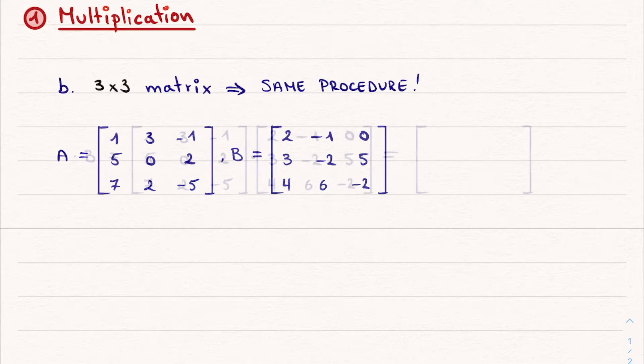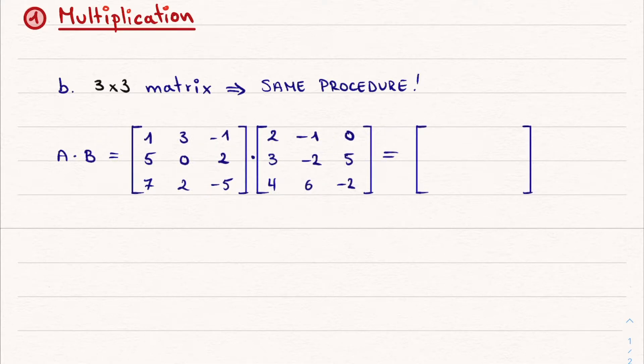Granted, this is a bit more work and thus more prone to errors, but the procedure remains exactly the same. The upper left element sits on the first row and the first column. Therefore, we isolate the first row of A and the first column of B. Then, we multiply the first two elements, add them to the product of the second pair of elements, and add the product of the final pair of elements.